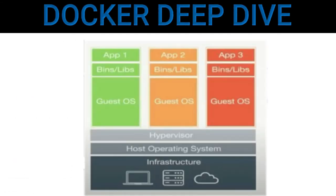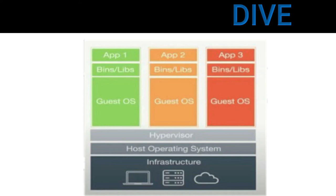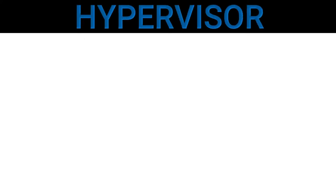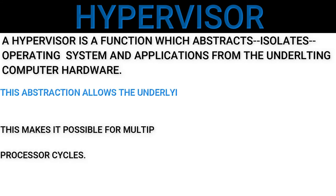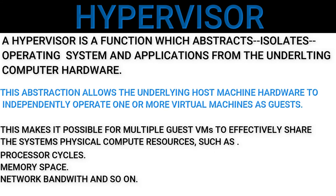We saw on the previous slide that we have a base operating system which runs on a server, and on that server we install multiple guest operating systems through virtualization. Between these operating systems there is a layer called a hypervisor. A hypervisor is a function which abstracts and isolates operating systems and apps from the underlying computer hardware. This abstraction allows the underlying host machine hardware to independently operate one or more virtual machines as guests.